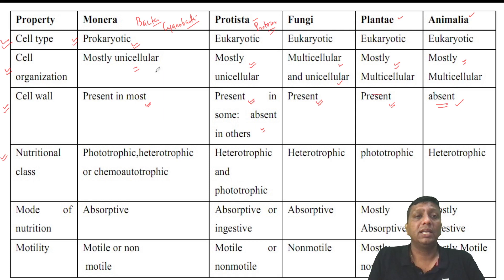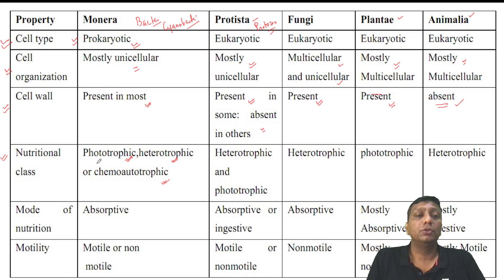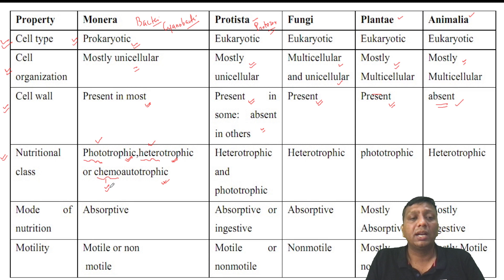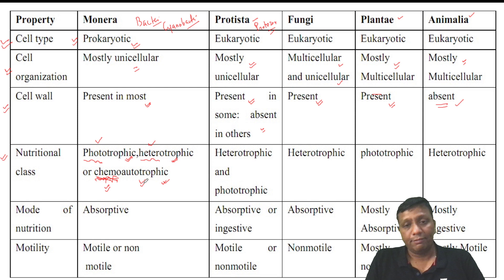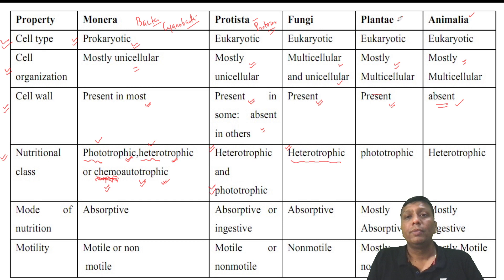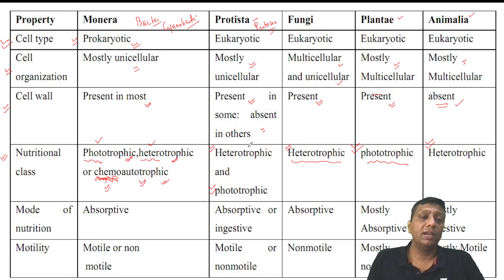Regarding mode of nutrition: Monera are phototrophic, heterotrophic, and chemo-autotrophic. Phototrophic means in the presence of sunlight they synthesize food. Heterotrophic means dependent on other organisms. Chemo-autotrophic means certain chemical compounds are responsible for food synthesis — not photosynthesis. In Protista: heterotrophic and phototrophic. Fungi are totally parasites or saprophytes — completely heterotrophic, cannot synthesize own food. Plantae have chlorophyll so they are phototrophic. Animalia are heterotrophic — we all are examples of heterotrophic organisms.